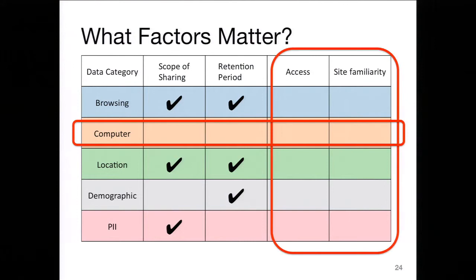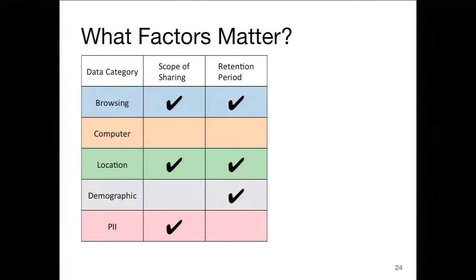Looking at the results, access and site familiarity — whether it was WebMD or WebDR — were not statistically significant for any of these categories, meaning they didn't impact people's willingness to share. Computer information also showed no significant differences across any factors. The interesting findings were around scope of sharing and retention period. The scope of sharing — whether we're sharing only within WebMD or also with Facebook and other websites — impacted willingness to share browsing information, location, and personally identifiable information. Retention period — whether indefinitely or one day — impacted willingness to share browsing information, location, and demographic information.